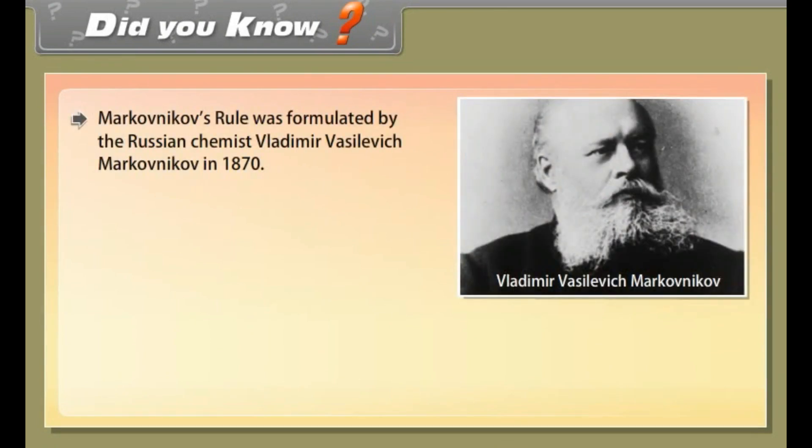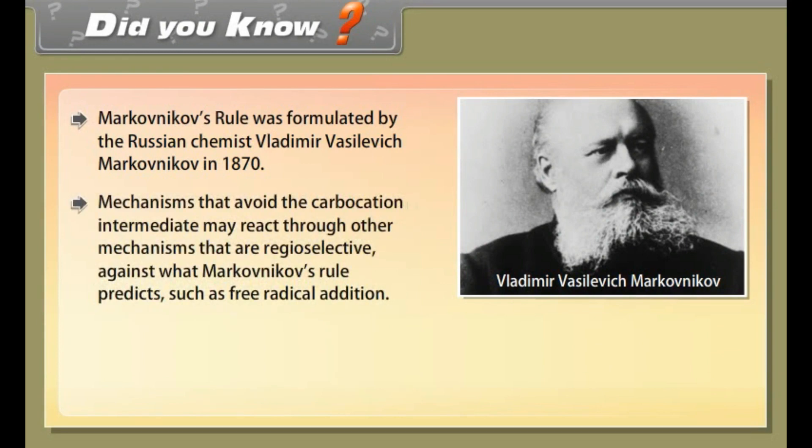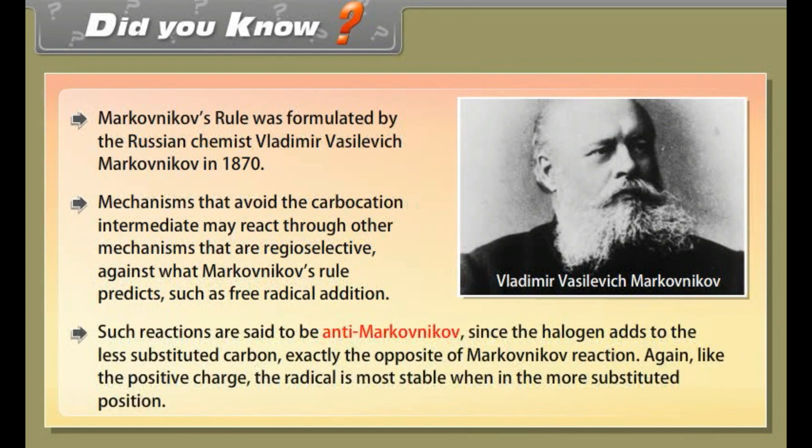Did you know? Markonikov's rule was formulated by the Russian chemist Vladimir Vasilevich Markonikov in 1870. Mechanisms that avoid the carbocation intermediate may react through other mechanisms that are regioselective against what Markonikov's rule predicts, such as free radical addition. Such reactions are said to be anti-Markonikov since the halogen adds to the less substituted carbon, exactly the opposite of Markonikov reaction. Again, like the positive charge, the radical is most stable when in the more substituted position.